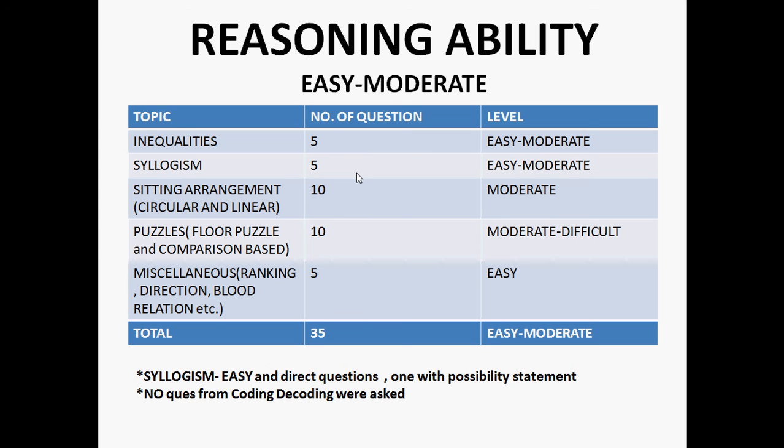Ten questions were from puzzles. One was a floor puzzle and another was a comparison-based puzzle. The level of puzzles was moderate to difficult. There were five questions from miscellaneous which were very easy. Overall level of reasoning ability was easy to moderate. Syllogisms were very easy and direct questions. One question was a possibility statement and no questions from coding and decoding.